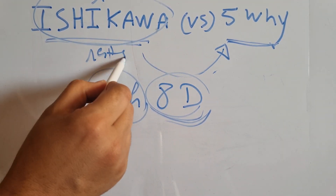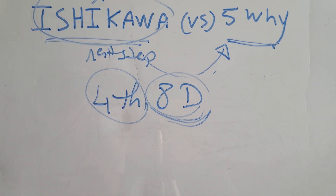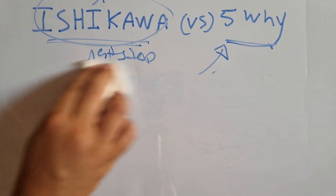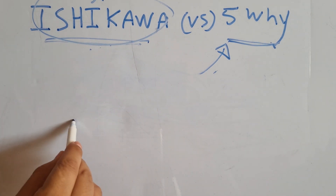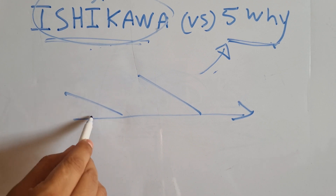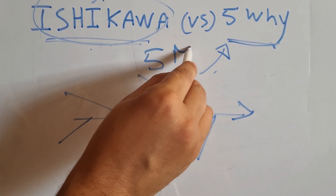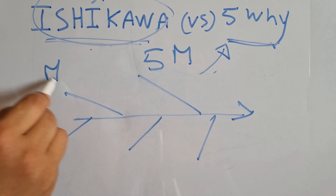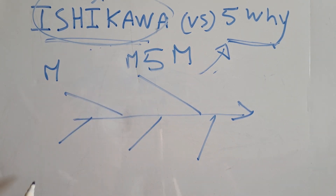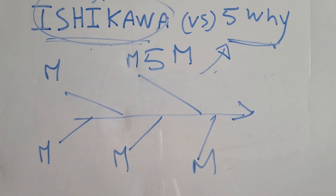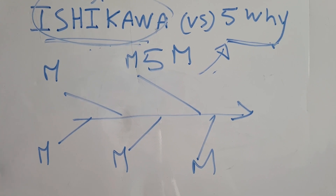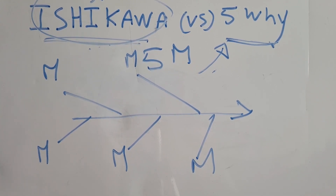The first step is to find out all the potential causes related to the issue. The Ishikawa diagram looks like this, and we have the 5M: the first M is Manpower, then Machine, Material, Measurement, and the last one is Method — how we are doing something that could create the issue.